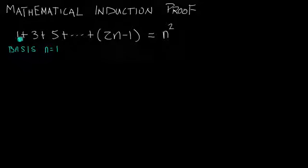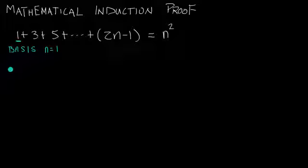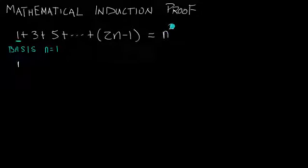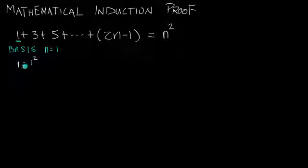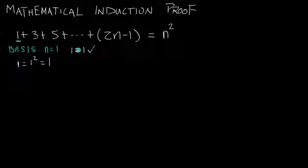The n equals 1 term on the left-hand side is equal to 1. For the left-hand side we have the value 1. For the right-hand side we have n squared, and n equals 1 gives us 1 squared, which equals 1. So we simply have 1 equals 1. For our basis case, 1 equals 1 is a true statement.